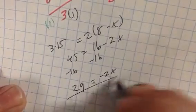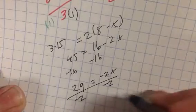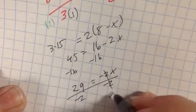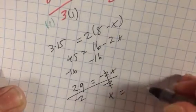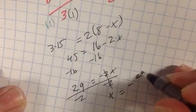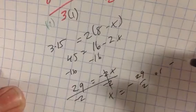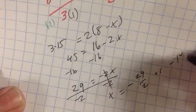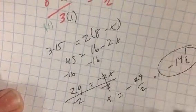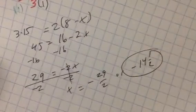Then, divide by negative 2. That's X equals negative 29 over 2 or negative 14 and a half. So, that is your answer.